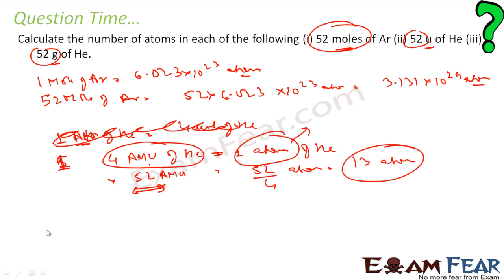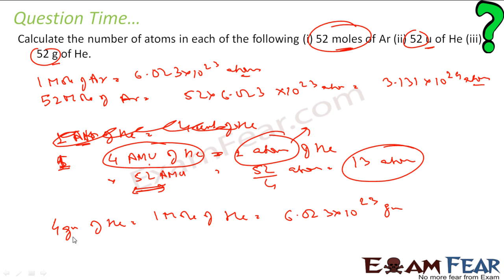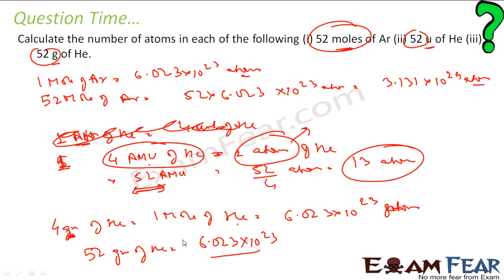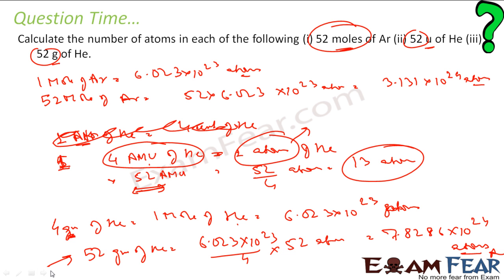Third: 52 grams of helium. We know 4 grams of helium equals 1 mole, which contains 6.023 × 10²³ atoms. So 52 grams of helium = (6.023 × 10²³ / 4) × 52 = 7.8286 × 10²⁴ atoms. That is the answer — 52 grams of helium will have 7.8286 × 10²⁴ atoms.